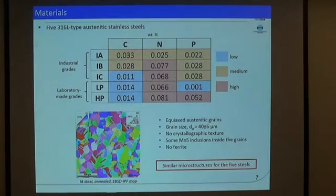Other than that the microstructure in terms of grain size of these five materials was very similar. We have no crystallographic texture, these are obviously austenitic grains. We have some manganese sulfides inside the grains and no ferrite and all this was similar for the five materials.